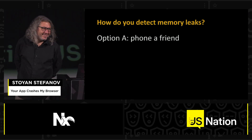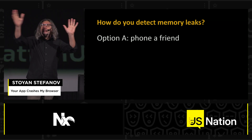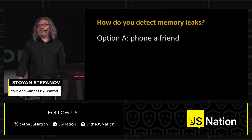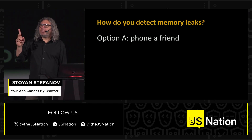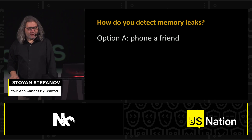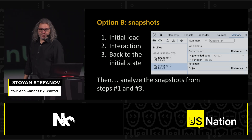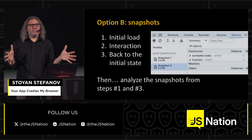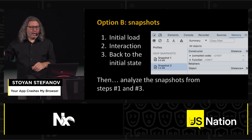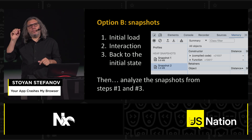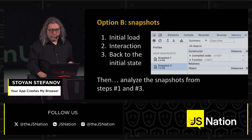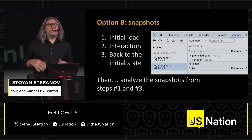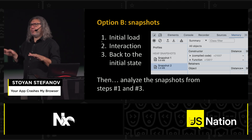Option A: call a friend who knows all the secrets of the universe and can dive into your app to unearth the leak. But the problem is there's usually not a single leak — even if you fix one, the next one is just around the corner. The better option: start debugging and taking memory snapshots. The idea is three steps: load the home page, perform some interaction, then go back to the initial state. Each time, cause the browser to garbage collect using the Memory tab in DevTools — take a snapshot — and in the end compare snapshots one and three to see if any objects were left behind that shouldn't be there.